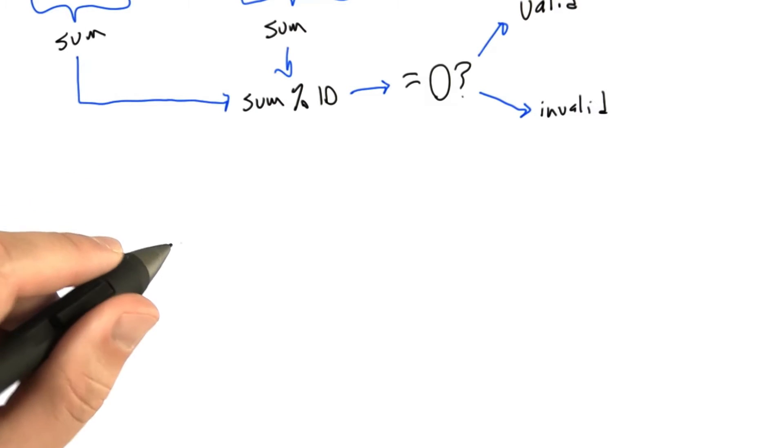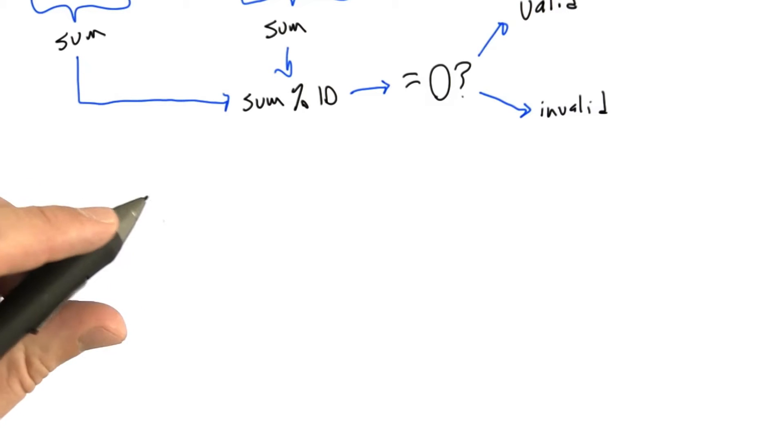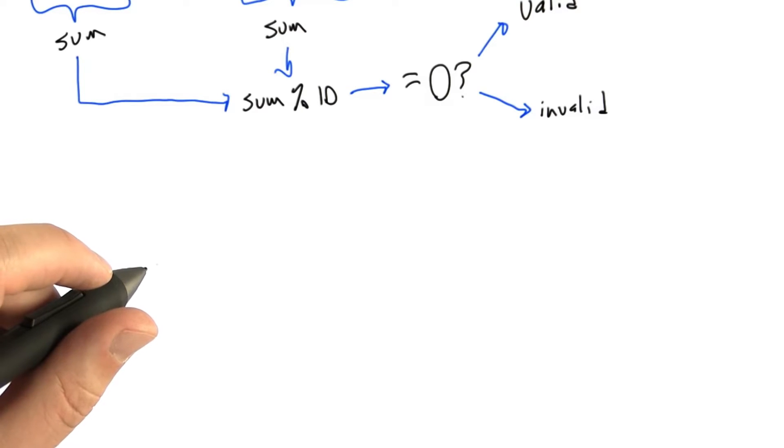The core of this random tester is a function called generate, which you're going to implement. Generate takes two parameters. The first is the prefix, which corresponds to the issuer identifier. This is a sequence of digits given to you that must appear at the start of the credit card number you generate.